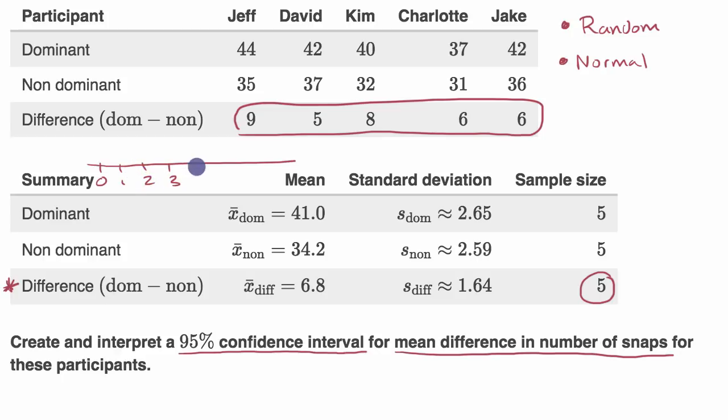three, four, five, six, seven, eight, and nine. So we have one data point where the difference was nine, one data point where the difference is five, one data point where the difference is eight, one data point where the difference is six, and another data point where the difference is six. And so this doesn't look massively skewed in any way. Our mean difference was right over here is about 6.8. It looks roughly symmetric. So we can feel okay about this normal distribution.